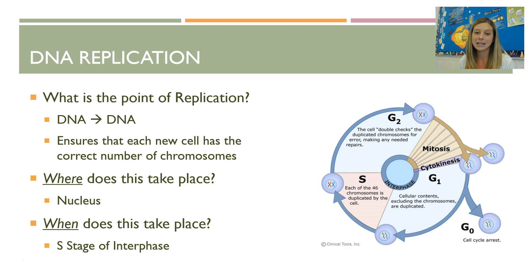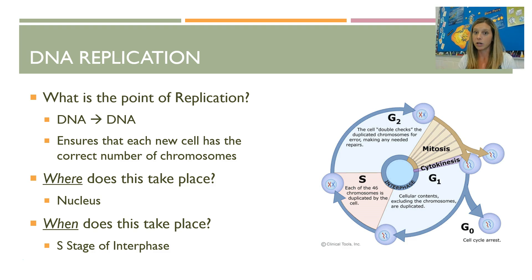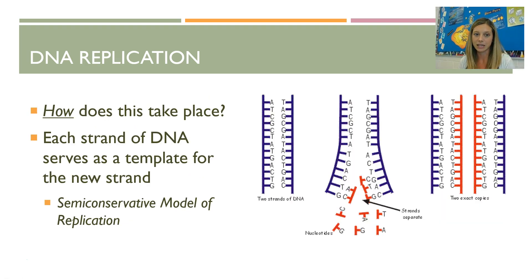Now we're going to get into DNA replication. The point is to use DNA to make more DNA. Why does a cell need to do that? Going back to our cell cycle unit — a cell needs to replicate its DNA so that when it divides, the new cells have the correct number of chromosomes. DNA replication takes place in the nucleus, during interphase — more specifically the S stage of interphase, where S stands for synthesis.